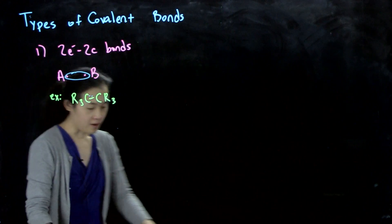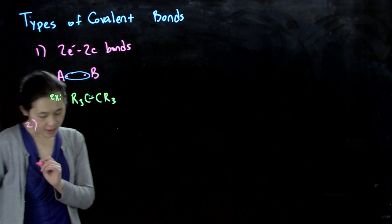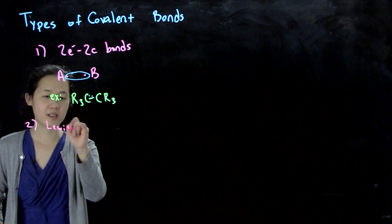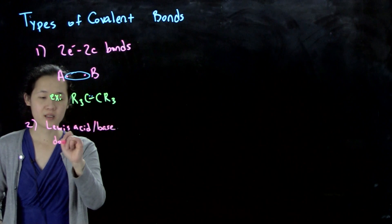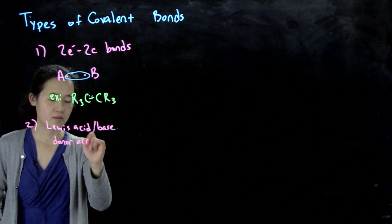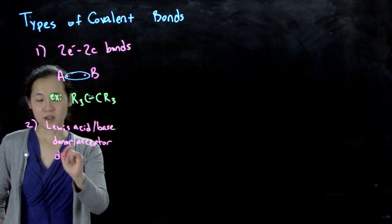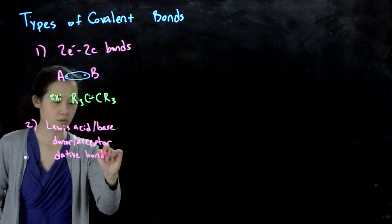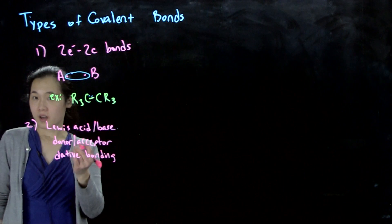The second type you've probably also seen before. These are called Lewis acid-Lewis base bonds, also called donor-acceptor bonds, and also dative bonding.